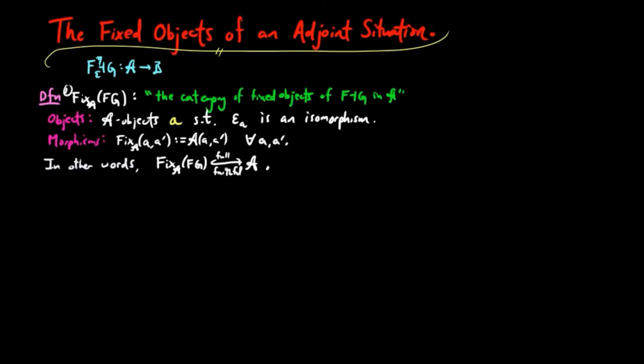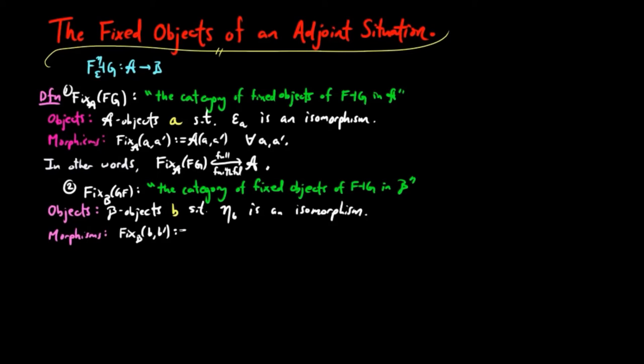Similarly, the category of fixed objects of FG in B is a full subcategory of B, consisting of B objects B such that the unit on B is an isomorphism.